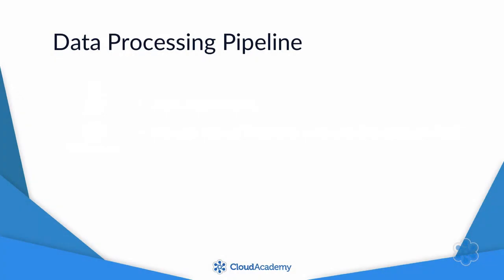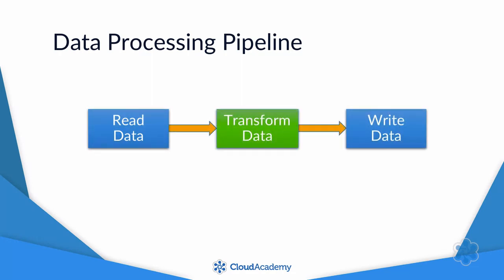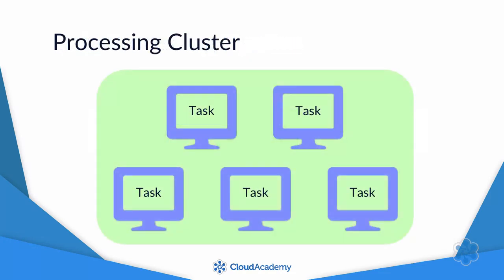Cloud Dataflow executes data processing pipelines. A pipeline is a sequence of steps that reads data, transforms it in some way, and writes it out. Since Dataflow is designed to process very large data sets, it distributes these processing tasks to a number of virtual machines in a cluster, so they can process different chunks of the data in parallel.